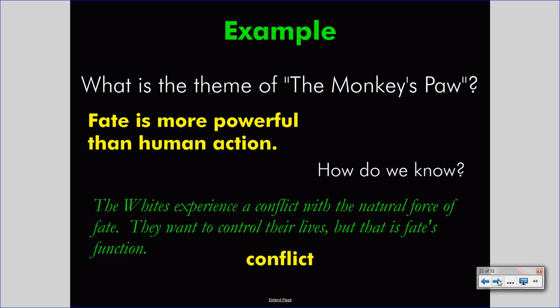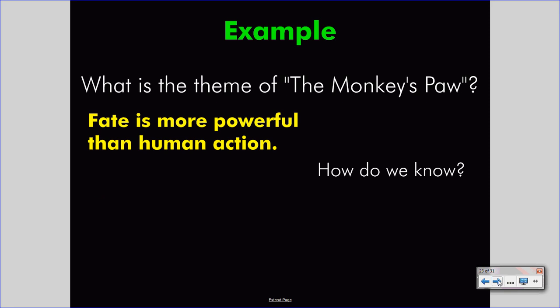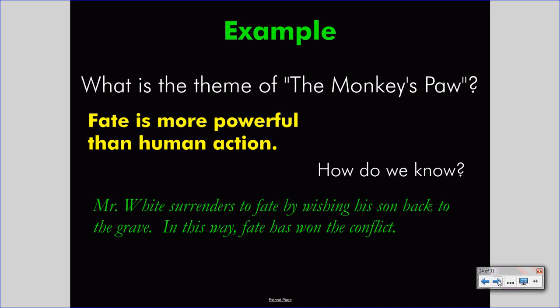We need one more piece of information to develop our thematic statement. At the end of the story, Mr. White surrenders to fate by wishing his son back to the grave. In this way, fate has won the conflict. This is the resolution of the conflict, and it helps us truly understand the thematic comment about fate: fate is more powerful than human action. The Indian Fakir said as much in the dialogue earlier in the story.